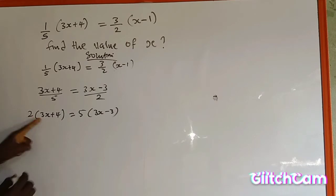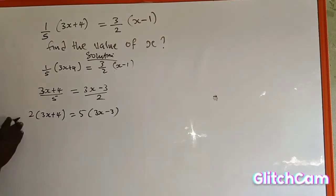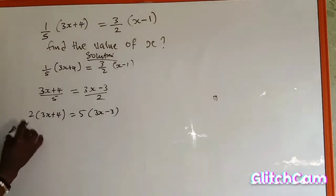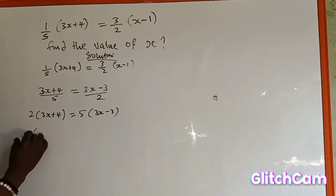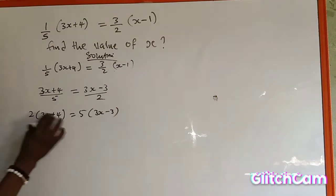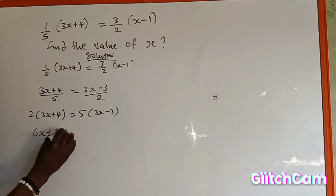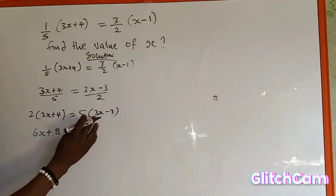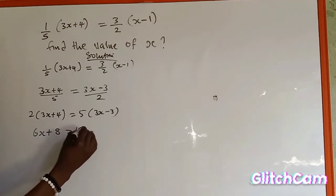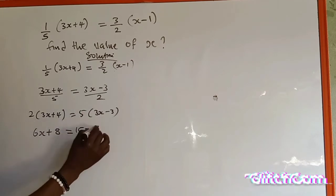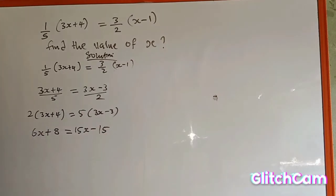The next is to open the bracket. 2 multiplied by 3s, if I am going to use this 2 outside to open this bracket, 2 multiplied by 3s will give me 6s, then plus 2 multiplied by 4 will give me 8, which is equal to 5 multiplied by 3s will give me 15s, minus 5 multiplied by 3 will give me 15.